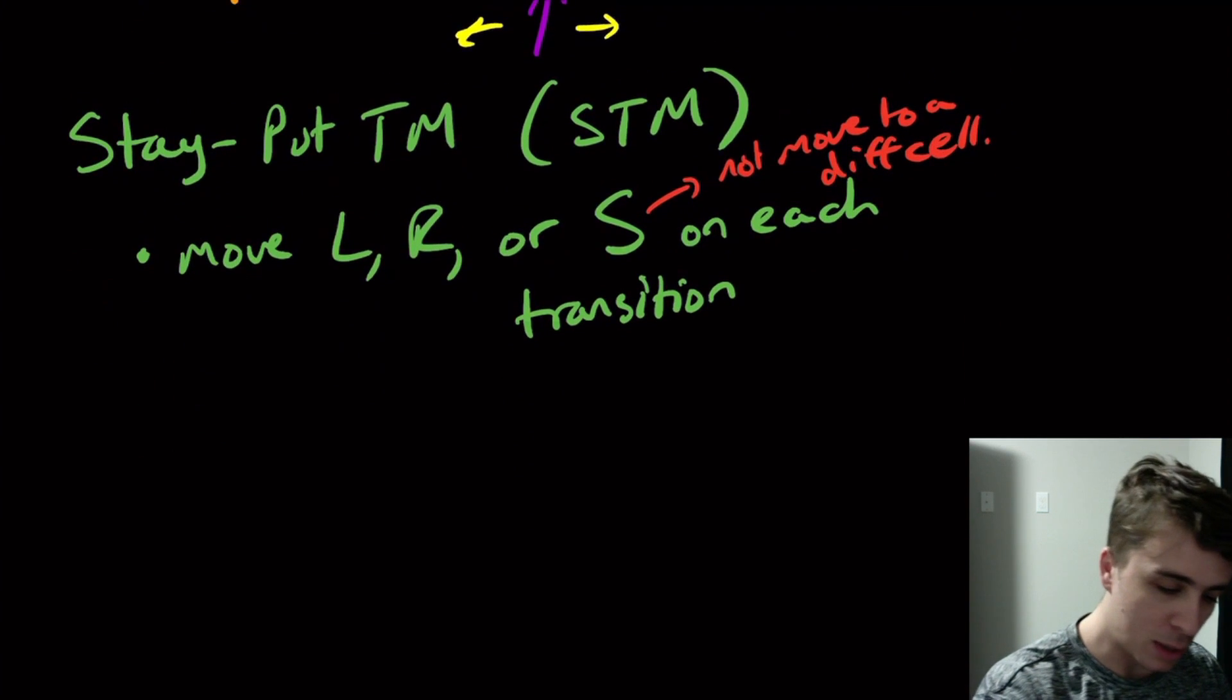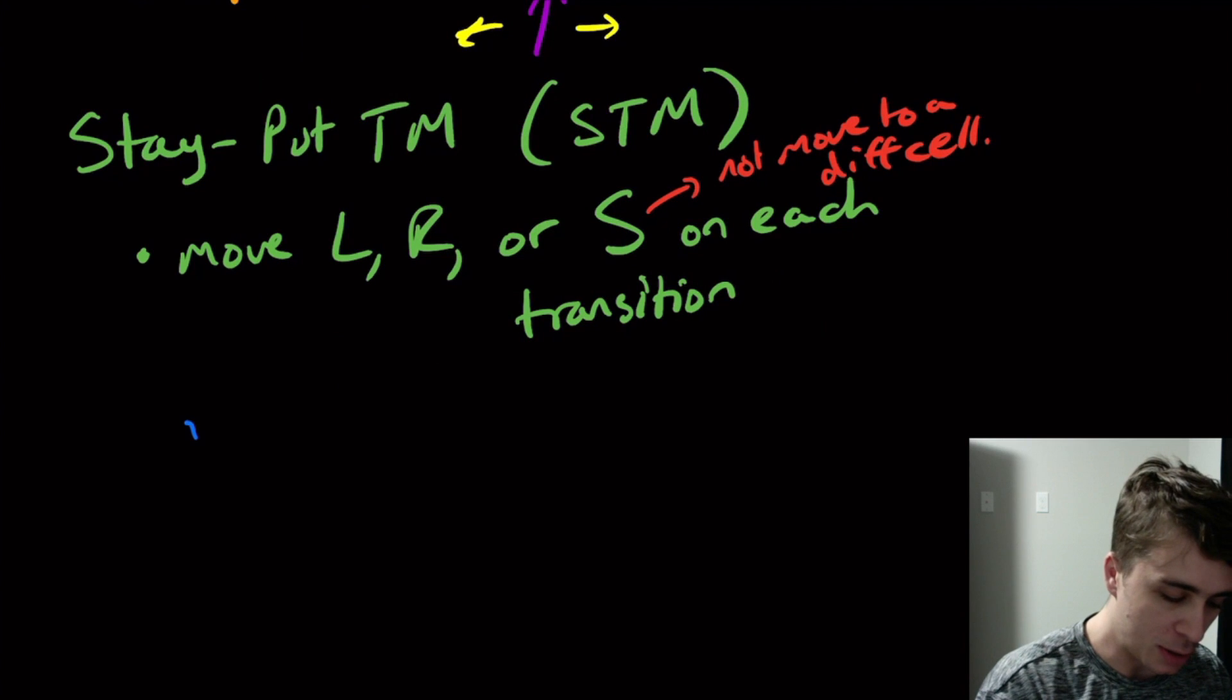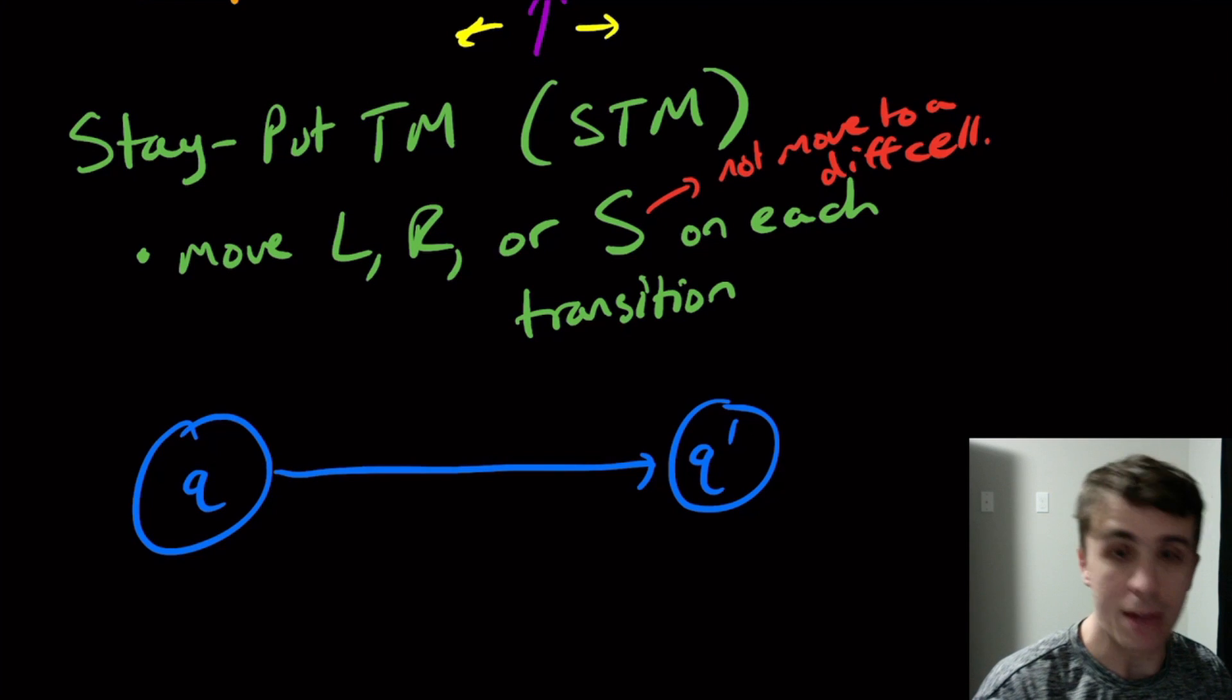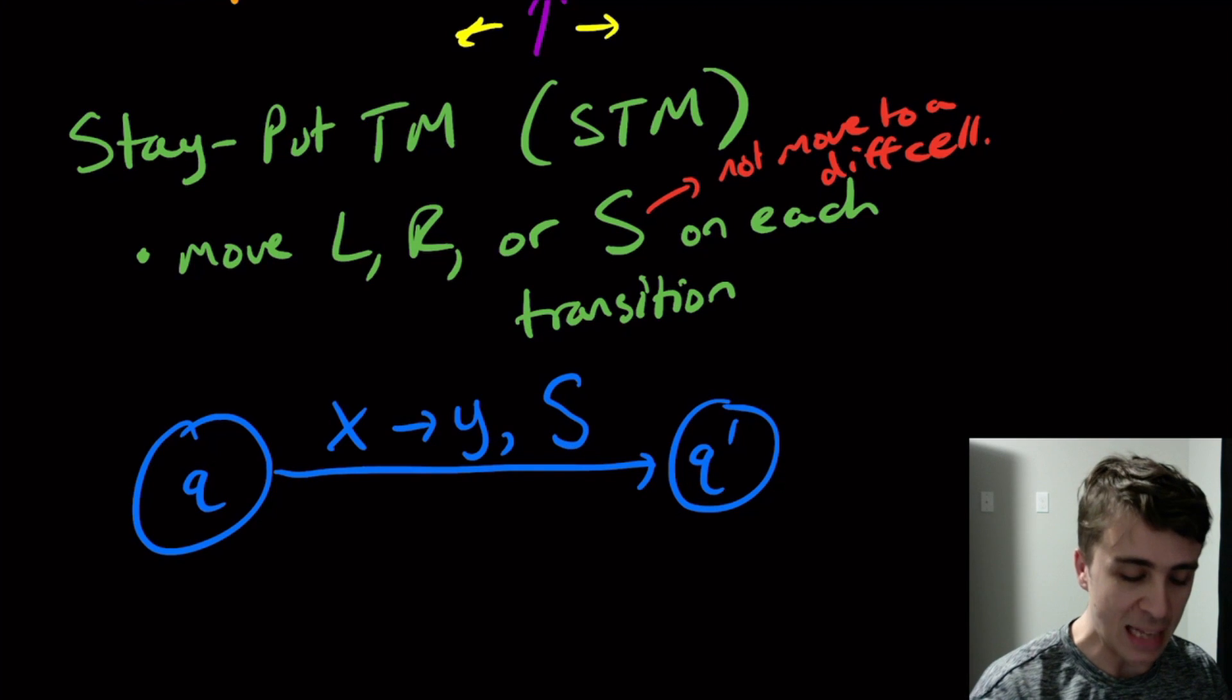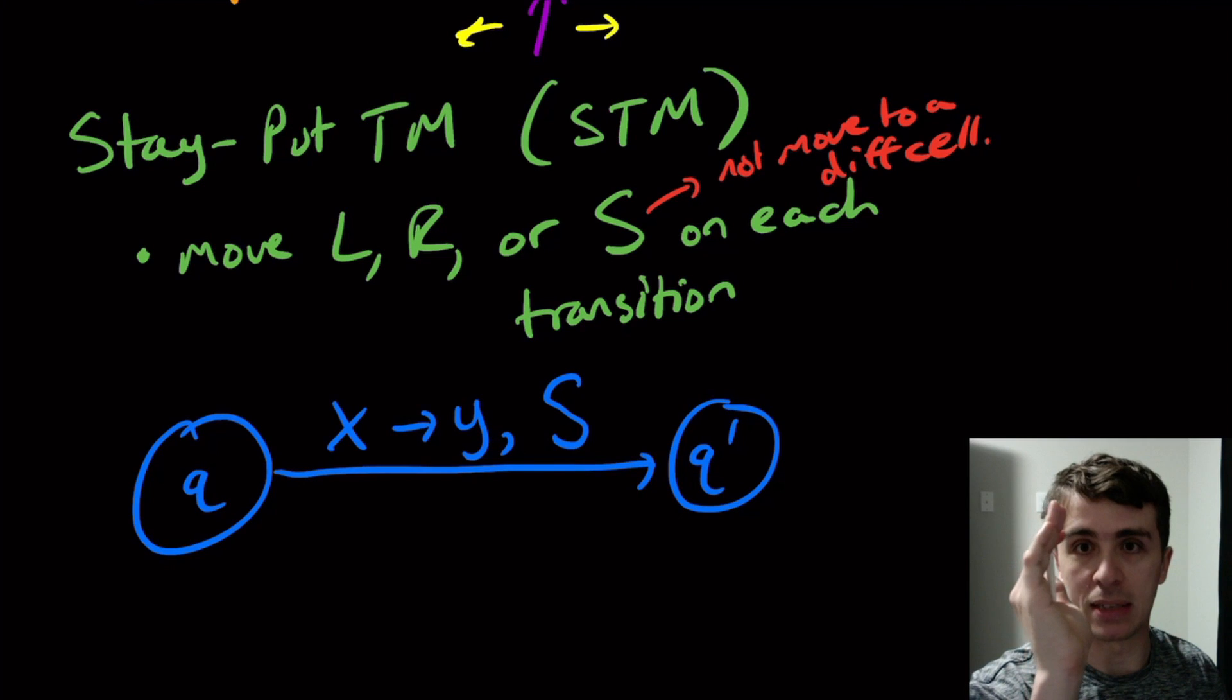So what would this look like? On a transition, say from Q going to Q prime, we would have a transition say we're changing an X into a Y, for example, with an S right here. So instead of an L or an R, denoting that the tape head moves left or right, here we are allowing ourselves to stay put. So it's a different type of transition we're adding to the machine model.